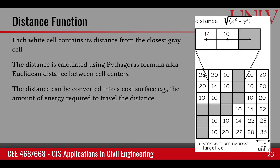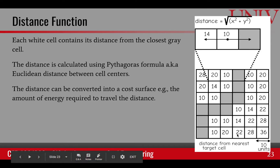If we go to this other cell, the gray cell we just looked at is not the closest. If we look carefully, this diagonal cell would be the closest. The distance would be 20 in one direction and 20 in the other, giving us the square root of 20 squared plus 20 squared, which equals approximately 28.14. All of these pixels provide the shortest distance to the gray cells.